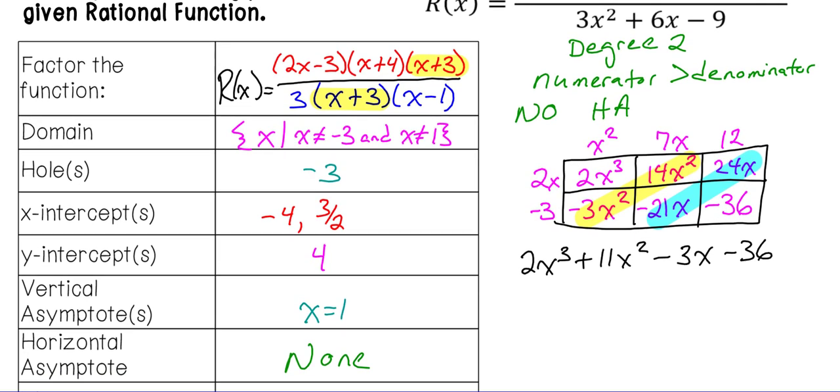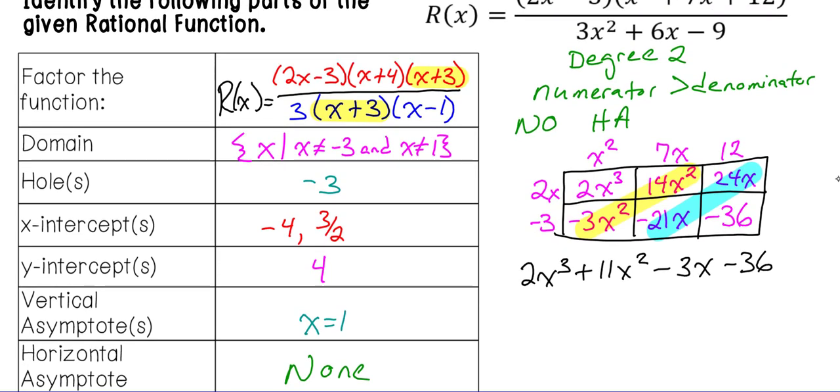So my combined variable would be 2x cubed. Negative 3 plus 14 would leave me with a positive 11x squared. Negative 21x plus 24x would be a negative 3x. And then minus 36. So the next step is we now want to do our division. So we want to take our 3x squared plus 6x minus 9 and divide it into our 2x cubed plus 11x squared minus 3x minus 36.